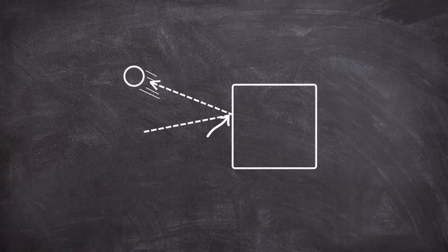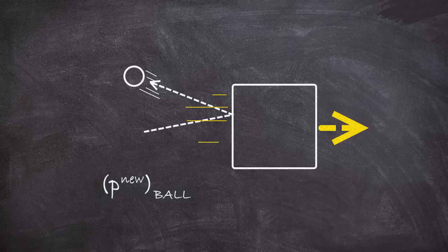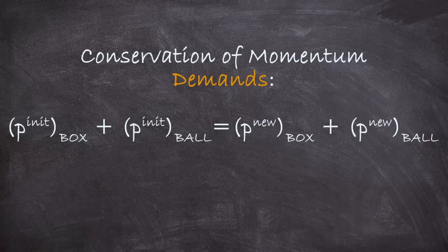So afterwards, the ball has a new momentum, and now the box, which initially had no momentum, has momentum too. Now, in any closed system, the total momentum is conserved. So this means that the initial momentum for the whole system must equal the total final momentum.